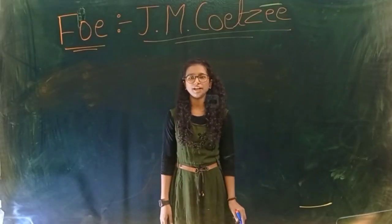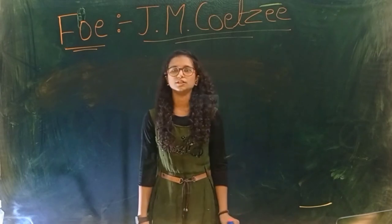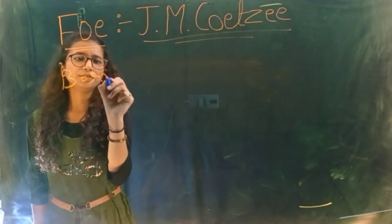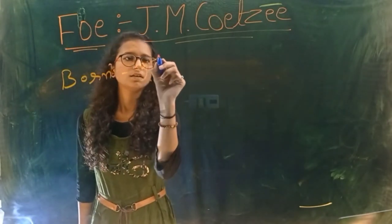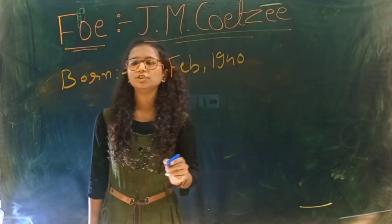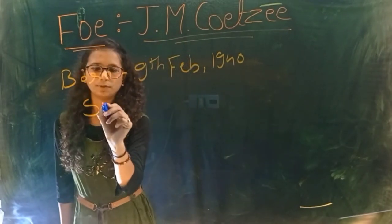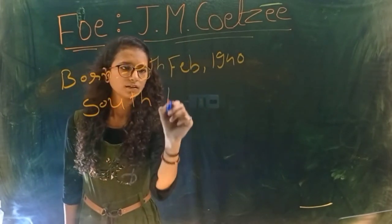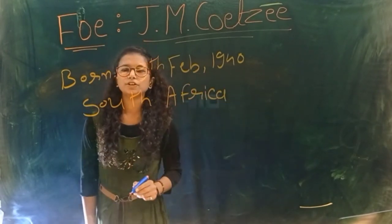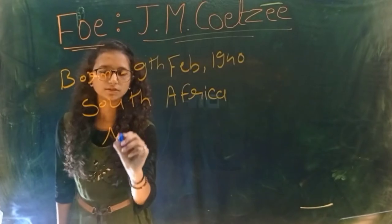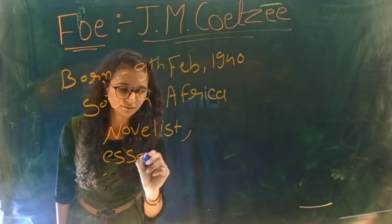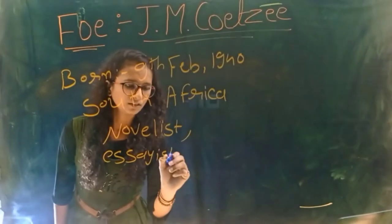First of all, we can throw some light on the author's life. J.M. Coetzee was born on 9th February 1940. He was born in South Africa. He was a novelist, essayist, and translator.